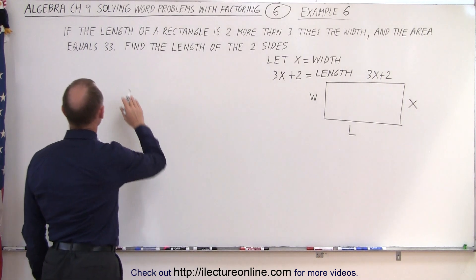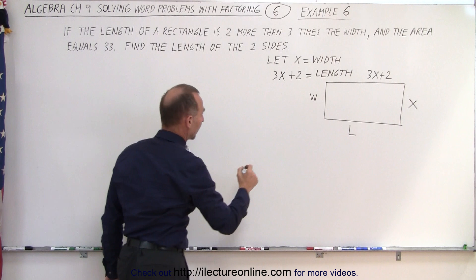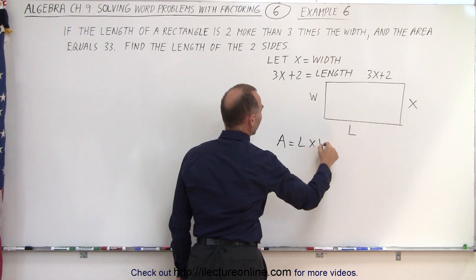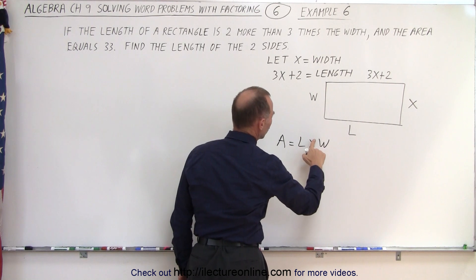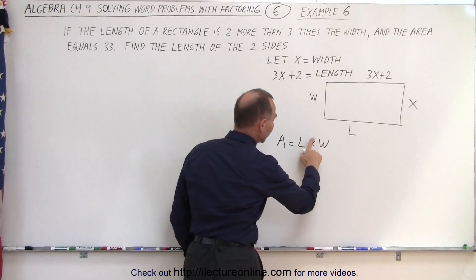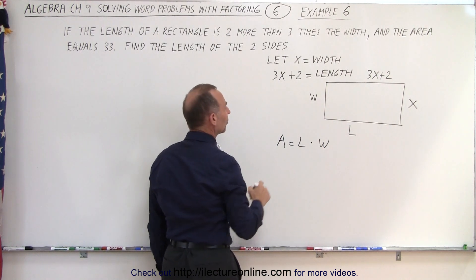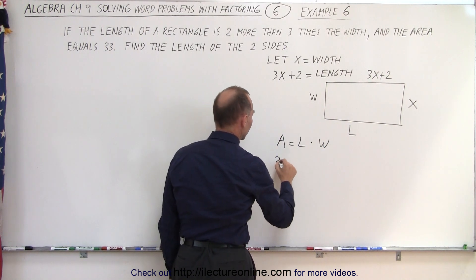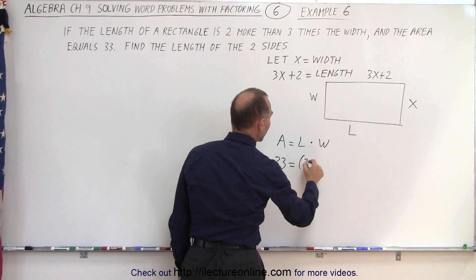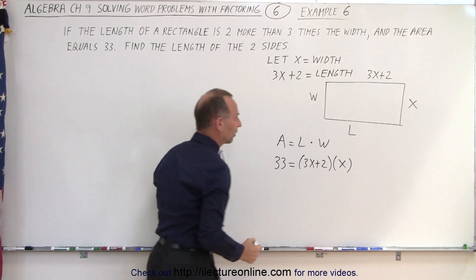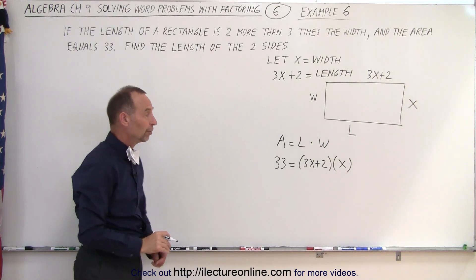Which means the width is equal to x, and the length is equal to 3x plus 2. So now we have a mathematical way of describing the length and the width in terms of a single variable x. They also tell us that the area equals 33. Now the area is equal to the length times the width. So that means that the area, which is 33, equals the length, which is 3x plus 2 times the width, which is x. And there's our quadratic equation.